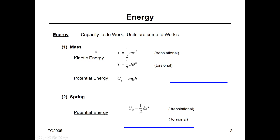Now where do we see energy in a mechanical system? There are two sources of energy in mechanical systems. The first one is the mass. For the mass, there are two types of energy: either kinetic energy, if the mass is moving, or potential energy, if the mass is above a datum line. So if this mass is moving, we have kinetic energy.